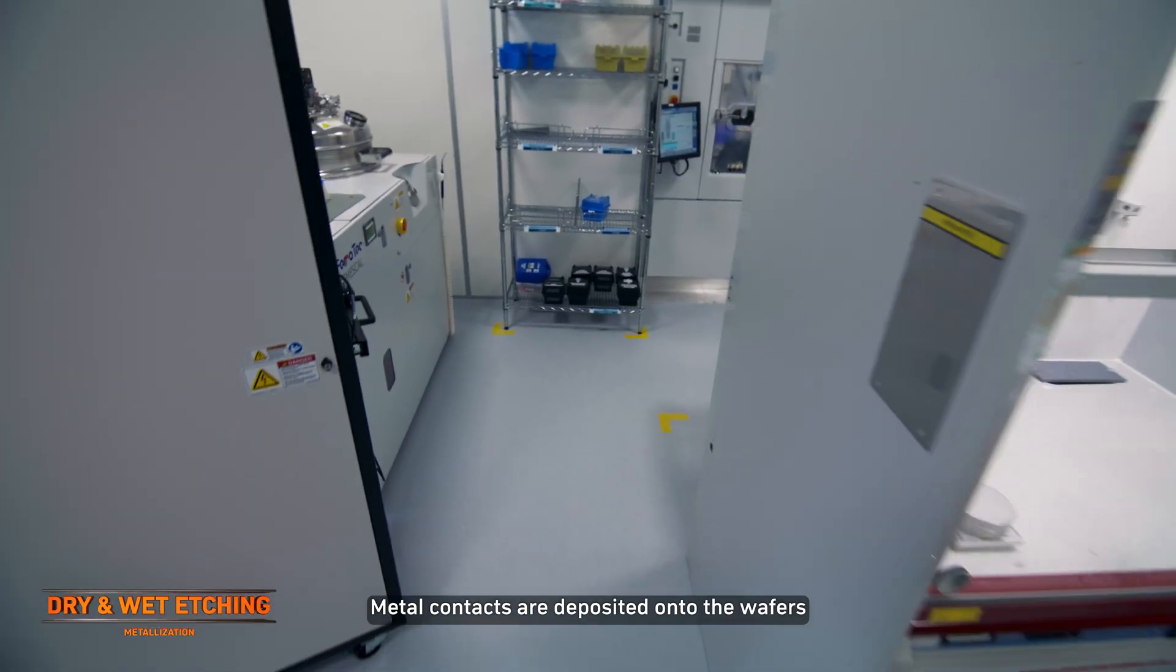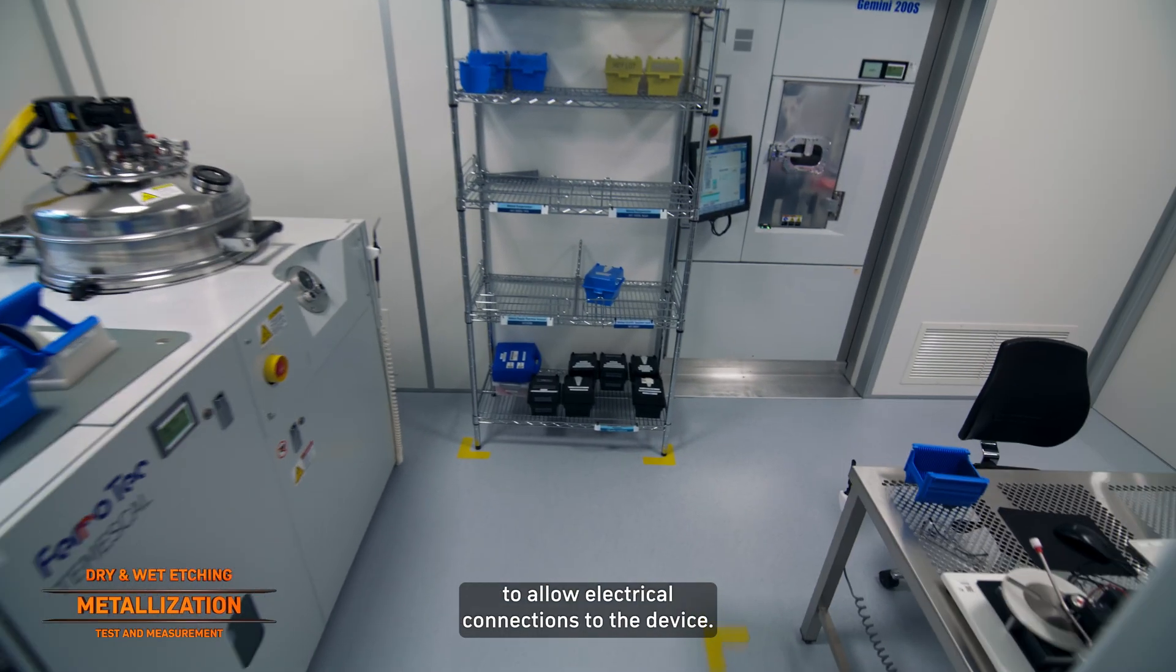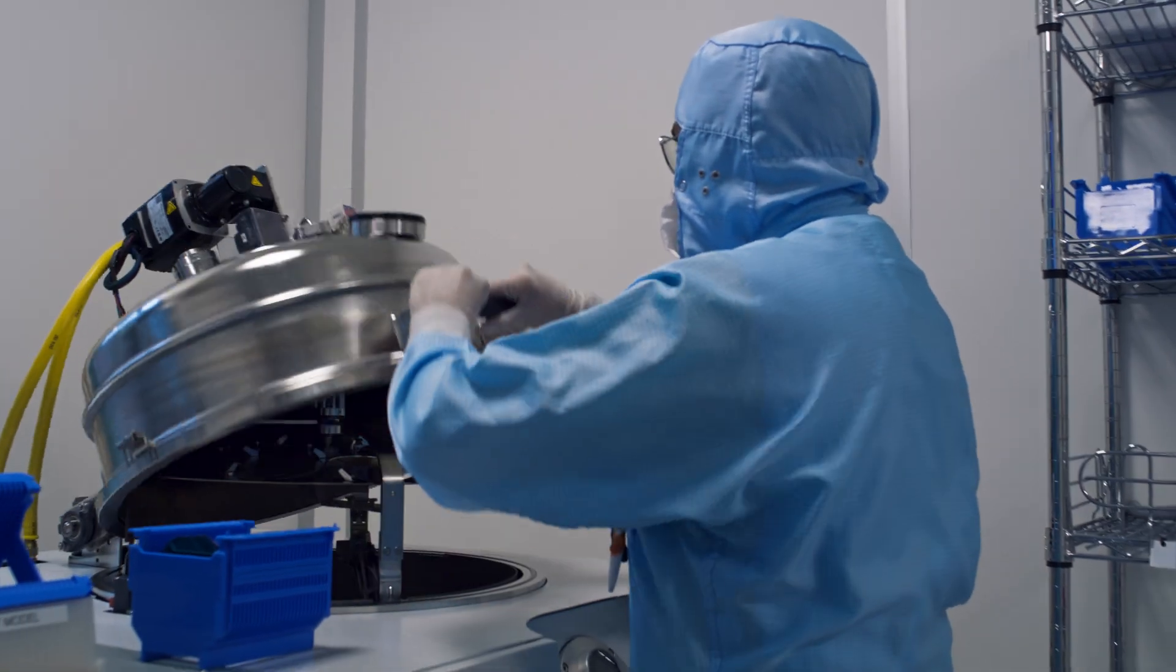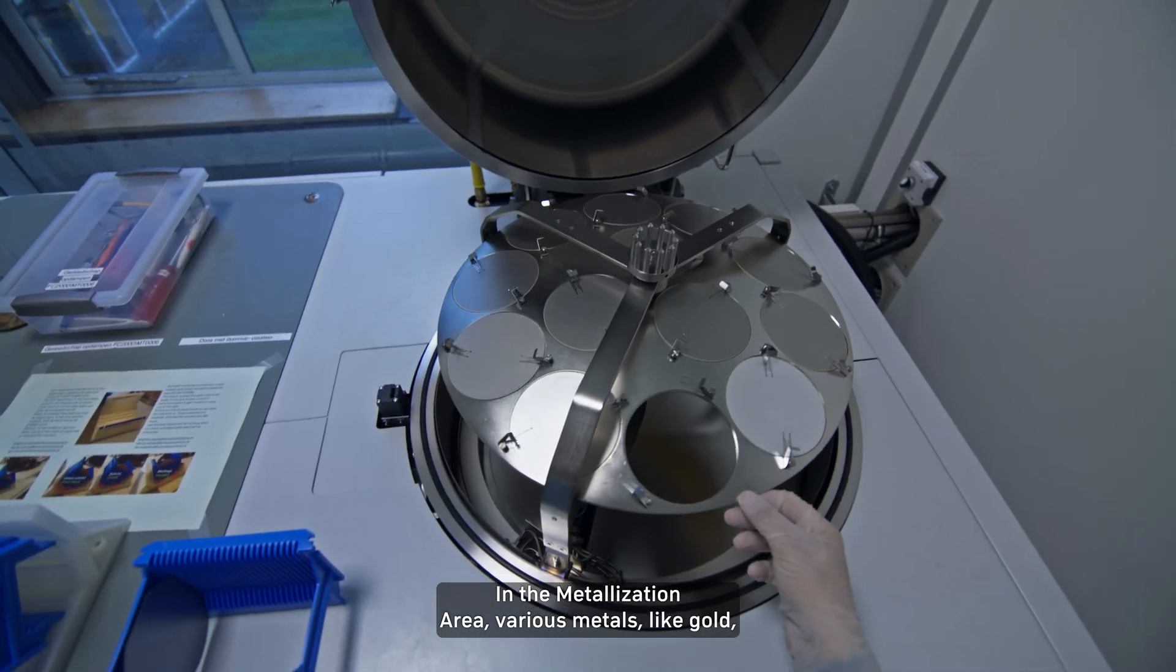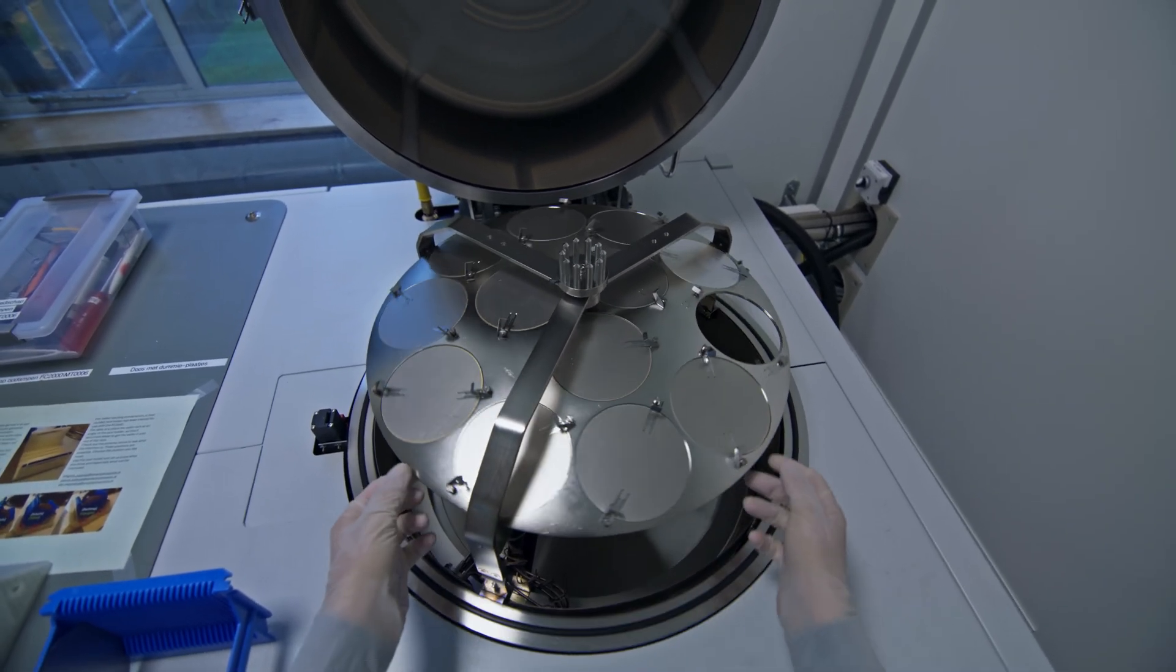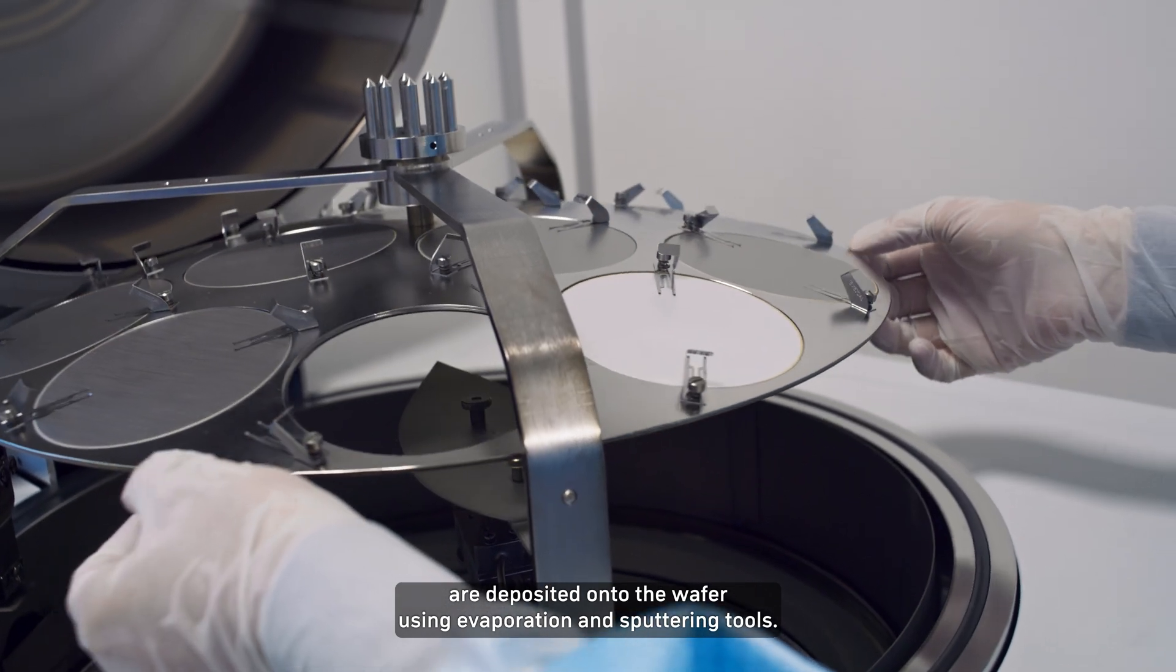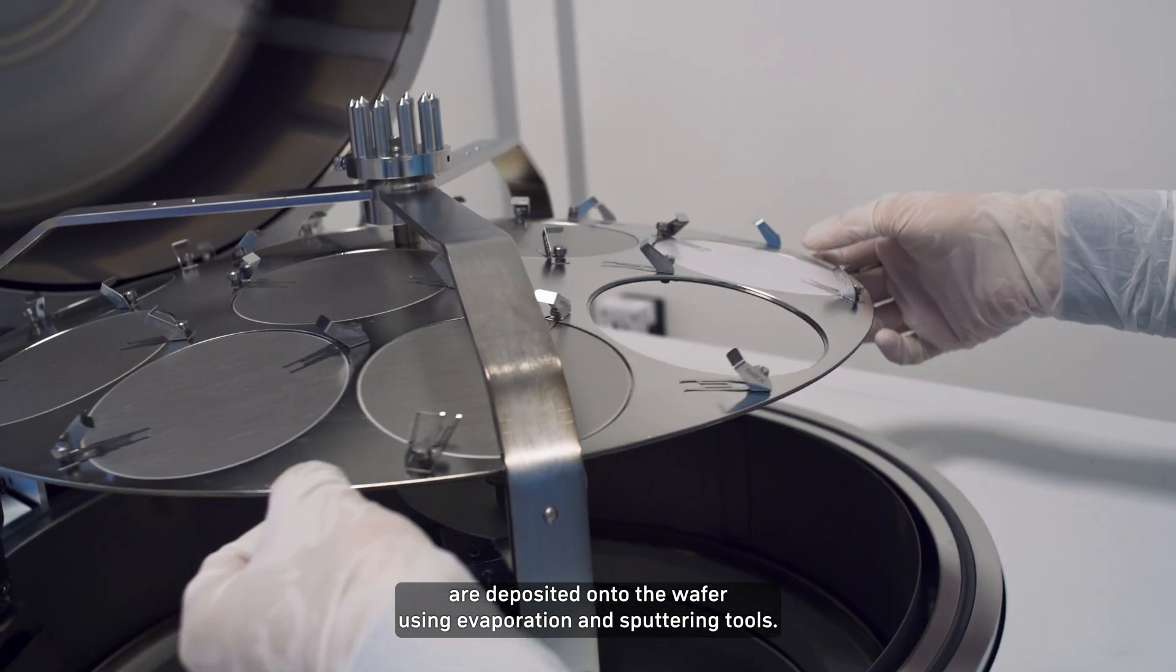Metal contacts are deposited onto the wafers to allow electrical connections to the device. In the metallisation area, various metals, like gold, are deposited onto the wafer using evaporation and sputtering tools.